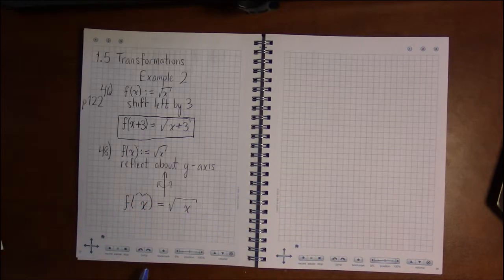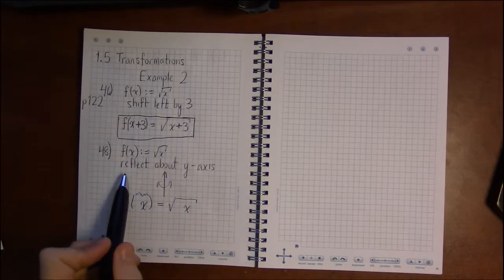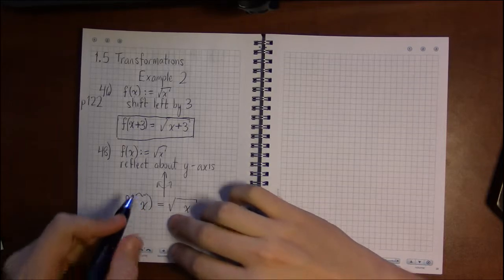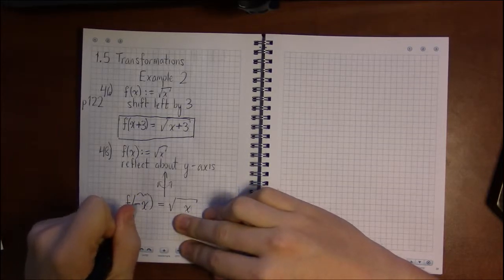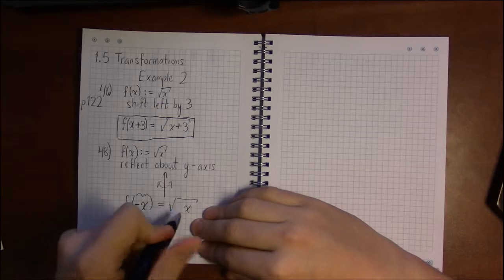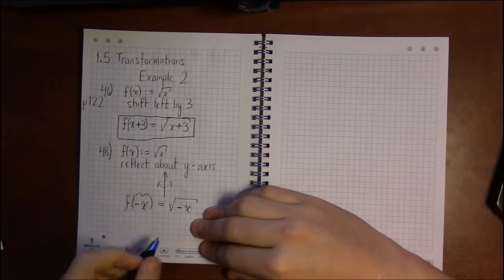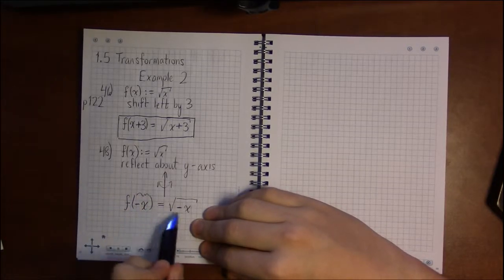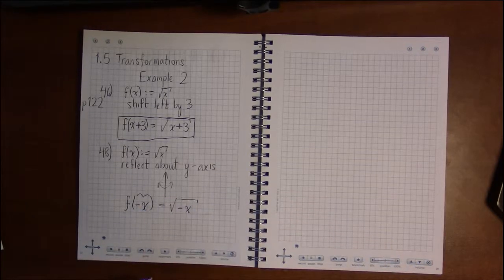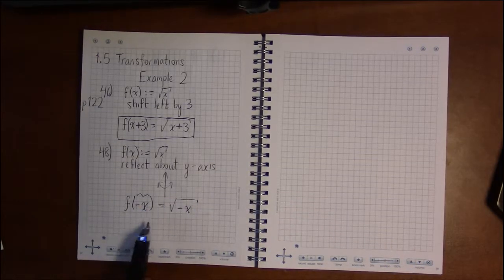So we're going to be as close to x as possible. And reflections are simply just multiplying by negative one, or sticking a negative in front. And since it's horizontal, we want the negative to be as close to the x as we can get. And this is it.